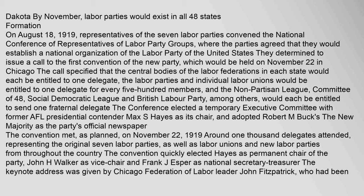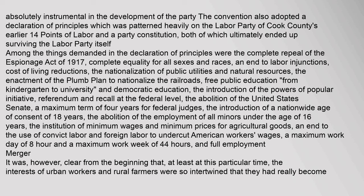The convention met as planned on November 22, 1919. Around 1,000 delegates attended, representing the original seven labor parties as well as labor unions and new labor parties from throughout the country. The convention quickly elected Hayes as permanent chair of the party, John H. Walker as vice chair, and Frank J. Esper as national secretary treasurer. The keynote address was given by Chicago Federation of Labor leader John Fitzpatrick, who had been absolutely instrumental in the development of the party. The convention also adopted a declaration of principles which was patterned heavily on the Labor Party of Cook County's earlier 14 points of labor, and a party constitution, both of which ultimately ended up surviving the labor party itself.